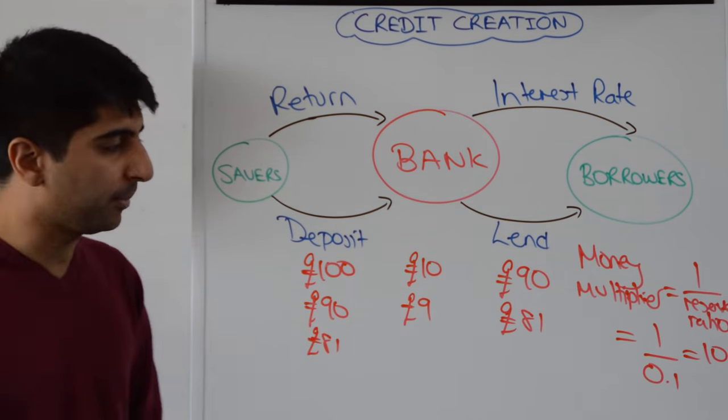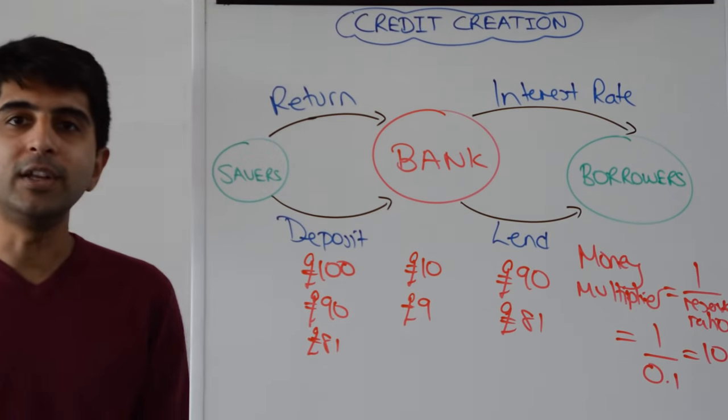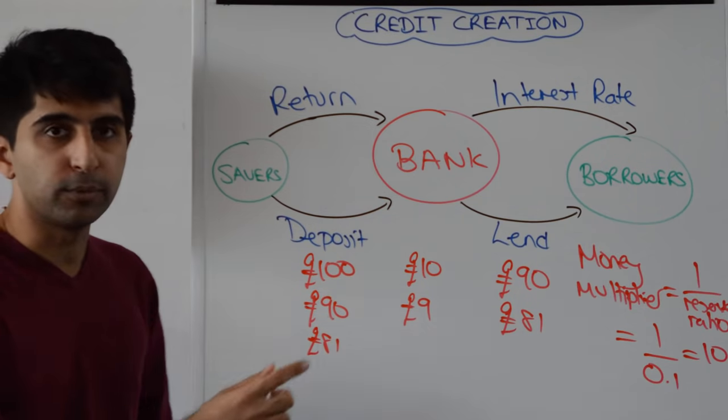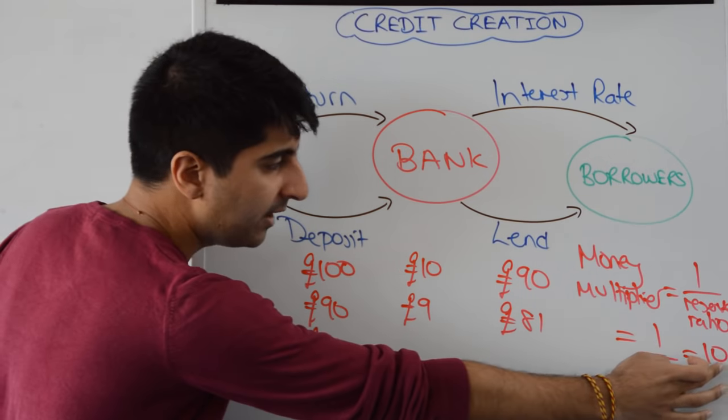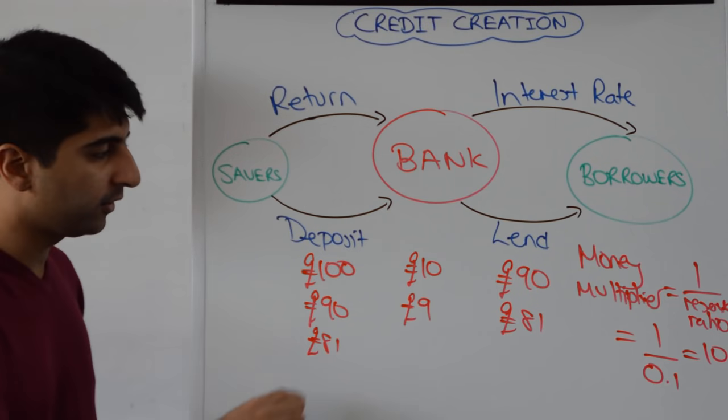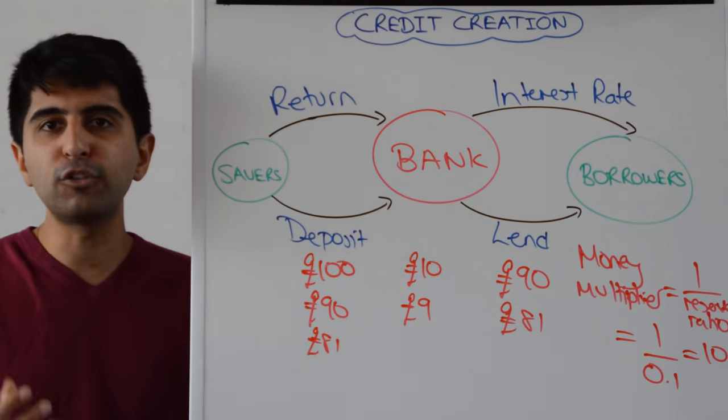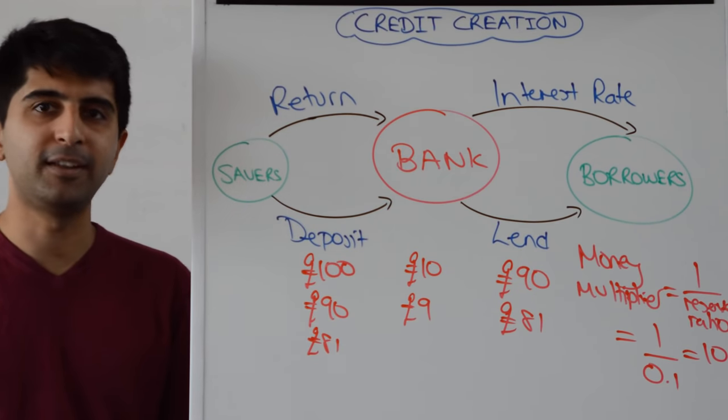To work out the increase in the money supply from a 100 pound deposit with a money multiplier of ten you need to take away 100 pounds from whatever figure you get. So ten times a hundred gives you one thousand pounds. Minus the initial deposit which is a hundred pounds because that already existed means you have 900 pounds of brand new money in the money supply.